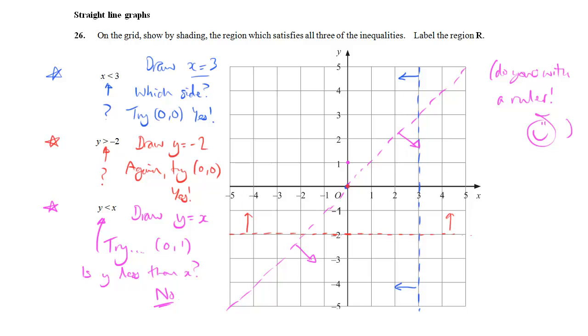So I put my arrows on there, and I can see which side of each of these lines I need to be. And finally I need to shade in that region there, which satisfies all those arrows. And I forgot to label it R. Oh well, too late. And that's your answer.